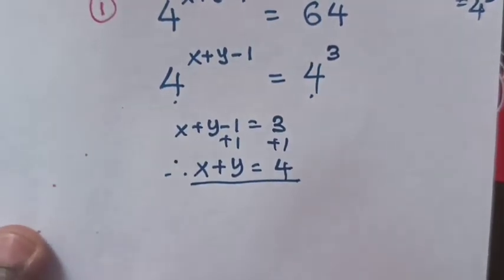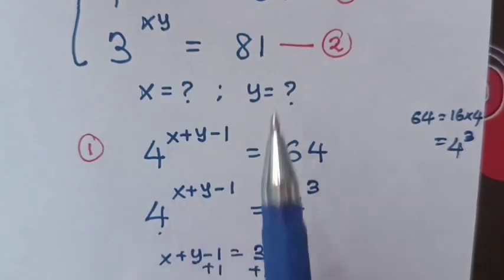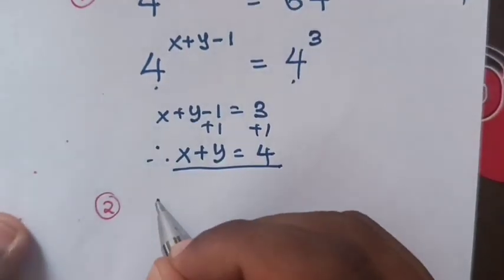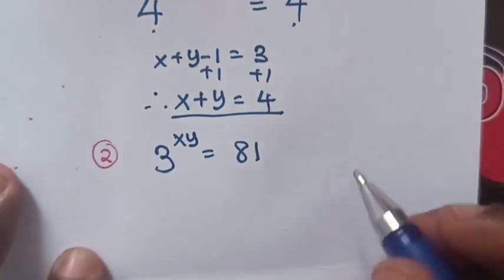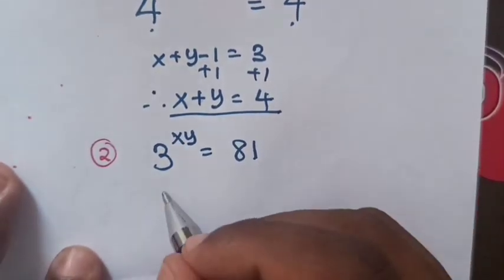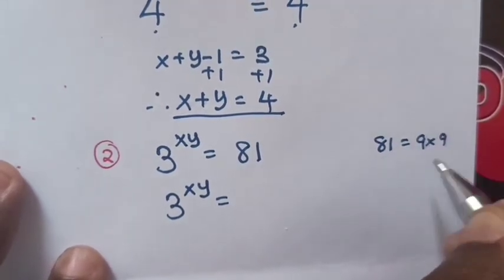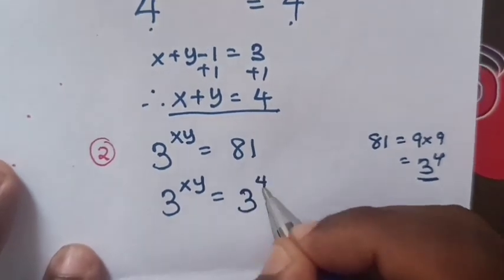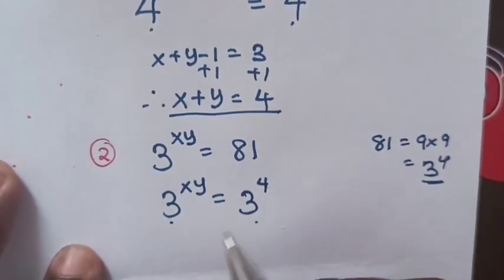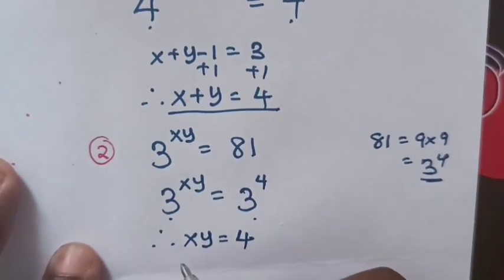Step 2: From equation 2, which is 3 to the power of xy equals 81. We know that 81 equals 9 times 9, which is 3 to the power of 4. Since we have the same base with different powers, we compare the powers and get xy equals 4.